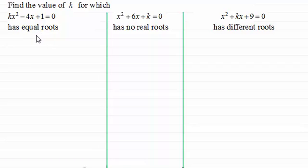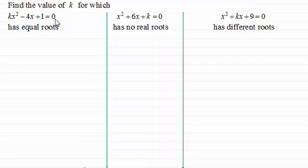For this video we've got three questions and you might want to pause the video and have a go at these. For the first one we've got kx squared minus 4x plus 1 equals 0, and we've got to find the value of k for which it has equal roots.